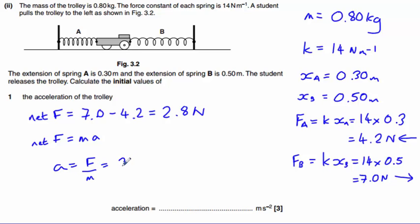Our force, remember, is 2.8. Our mass is 0.8, which gives us an initial acceleration of 3.5 meters per second squared.